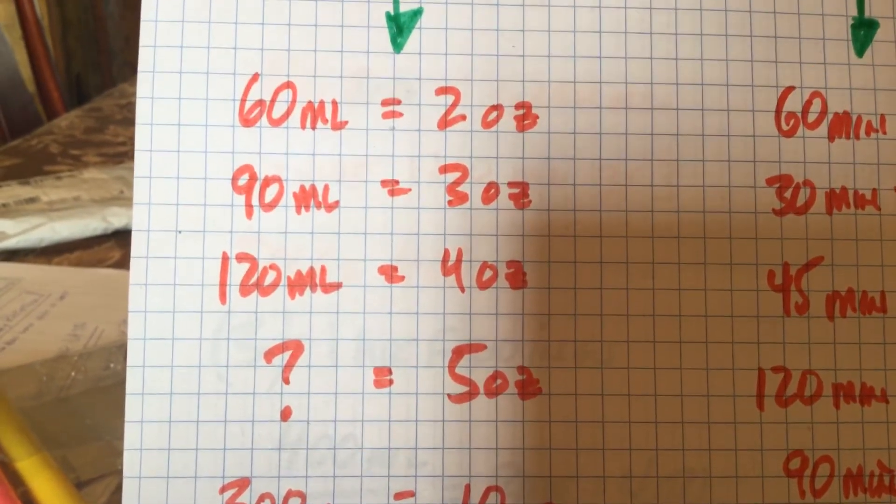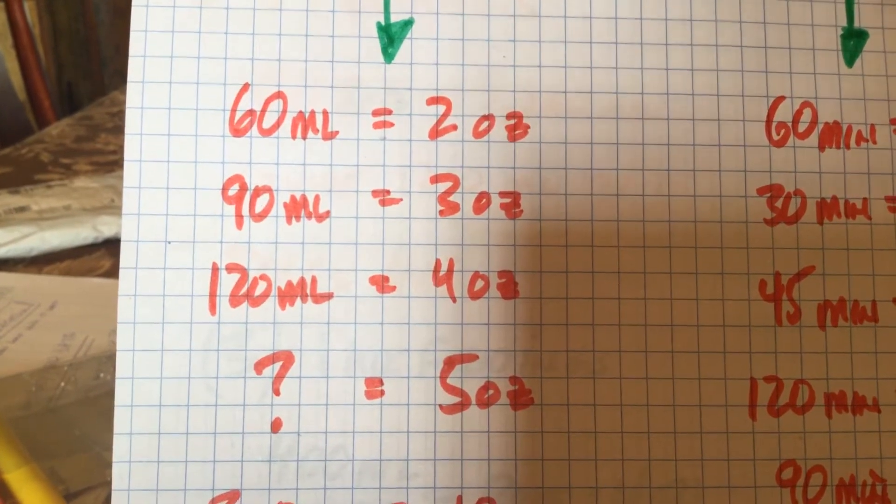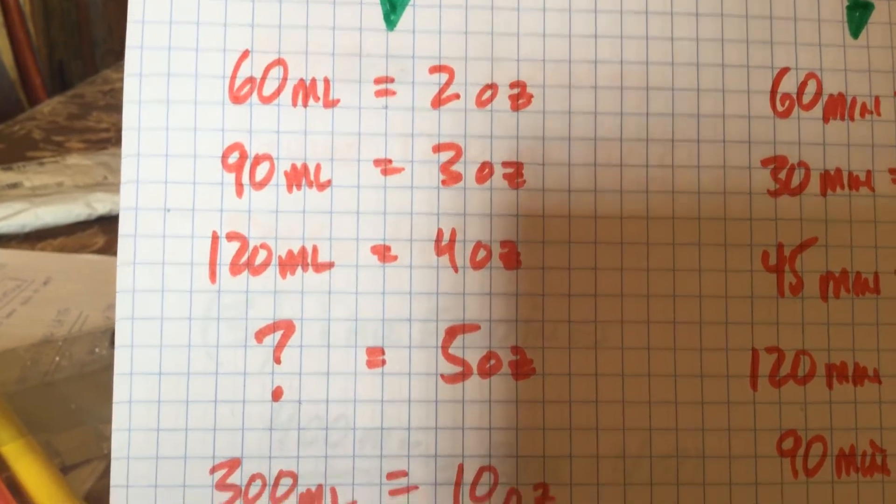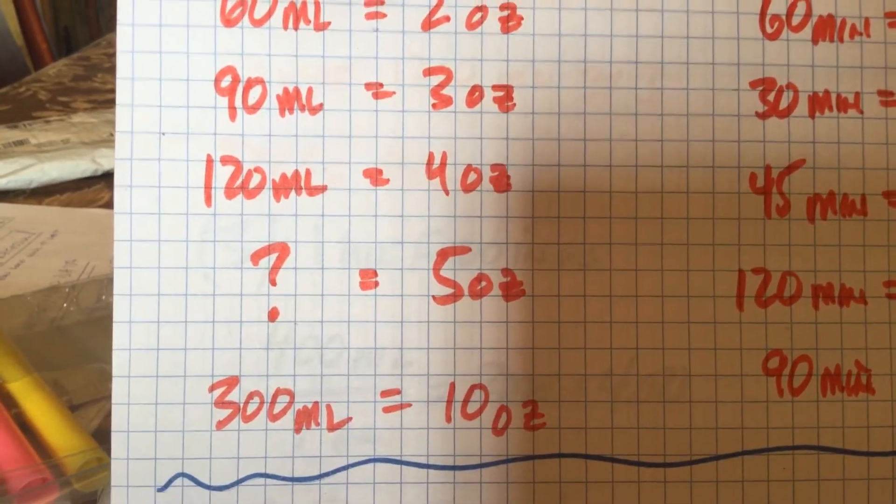Can you guess how many milliliters 5 ounces is? Well, it's 30 times 5 or 150, 150 milliliters, and 300 milliliters is 10 ounces.